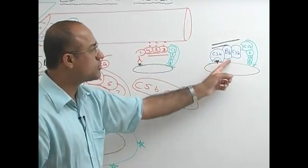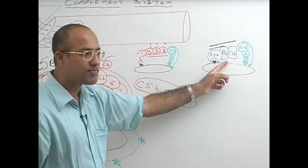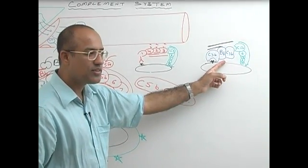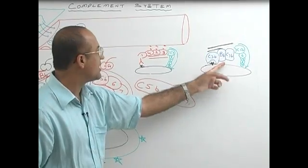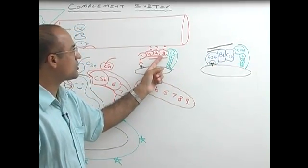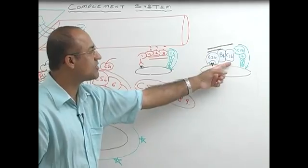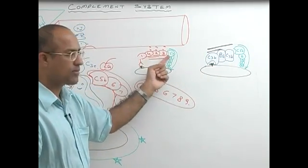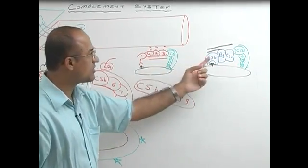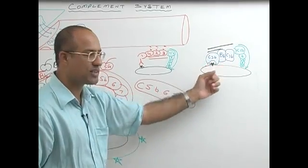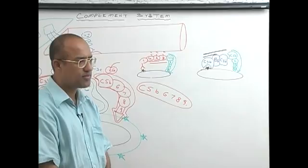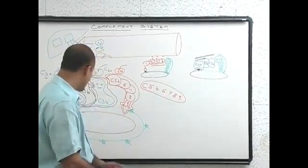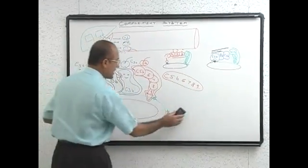But C3B, BB are the C3 convertase of alternate pathway, is that right? Then of course C3B will bind here as well as there, this whole complex will become C5 convertase, these will become also C5 convertase and then final common pathway. Is it difficult to understand? It is easy, isn't it? It is dangerously easy.